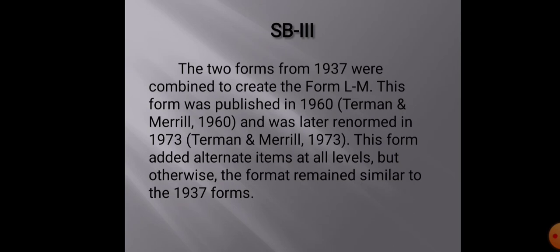Another important feature of SB3 was that the two forms created in SB2 — Form L and Form M — were combined into a single form labeled Form LM, published in 1960. The norms of Form LM were reconstructed in 1973, and alternate items were added at all levels, while the overall format remained similar to the 1937 form.